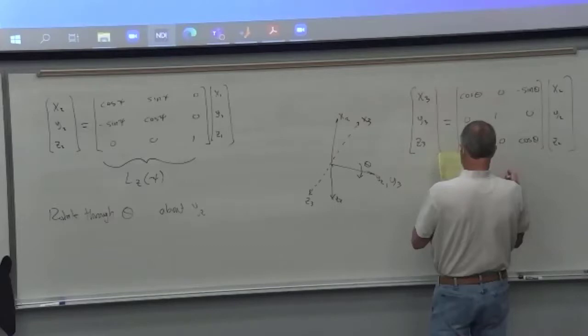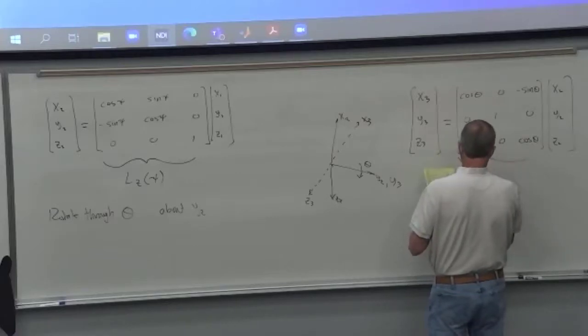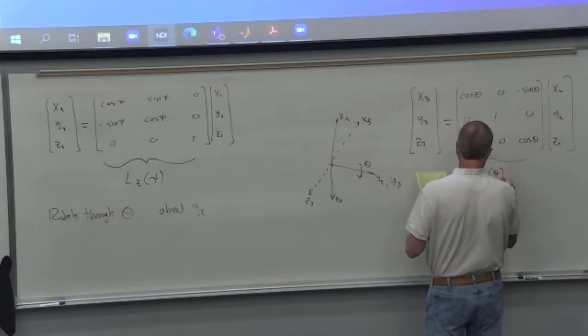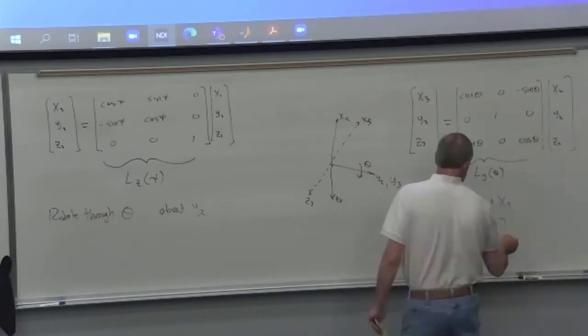There's better pictures in the book, so refer to those. Now in this case, since we're rotating around y2, that doesn't change. But z's do change and x's do change, and so the matrix looks like this. The book calls this L_y(theta), rotation about y of an angle theta.